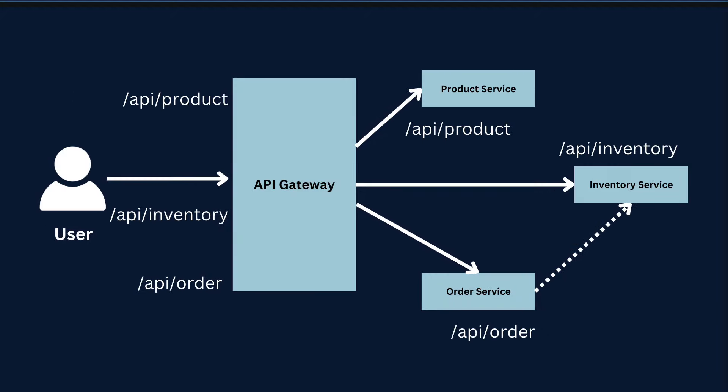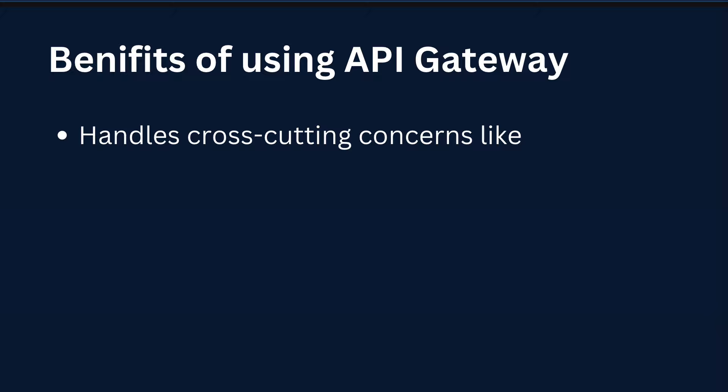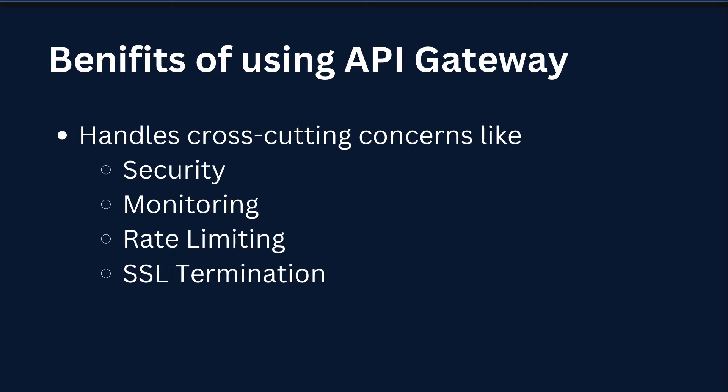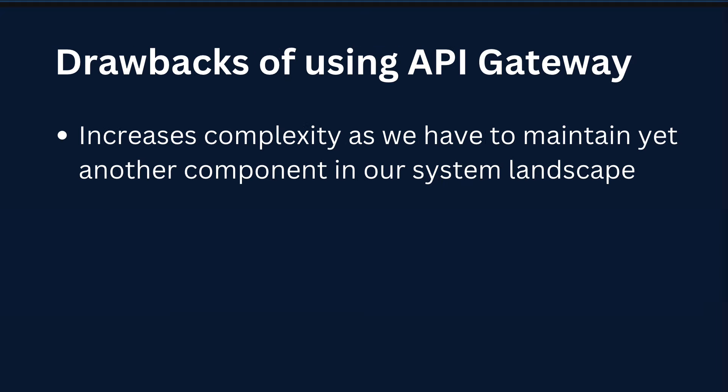The API gateway acts as an entry point for all requests to our system. If in the future there is a change to the product service, all we have to do is change the path URL of the product service inside the API gateway, and the clients won't even know that something has changed. Another advantage is that an API gateway handles cross-cutting concerns like security, authentication, authorization, monitoring, rate limiting, and SSL termination. There are also some drawbacks: it increases the complexity of the system.